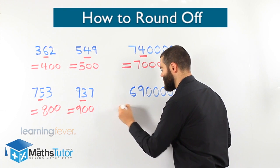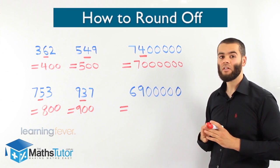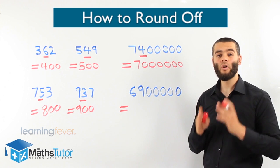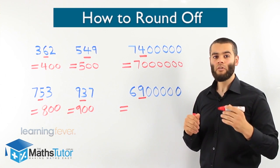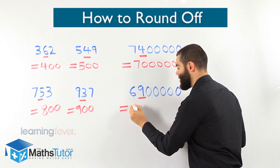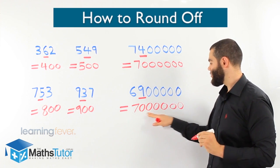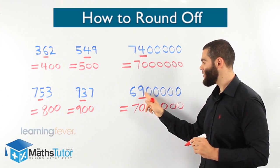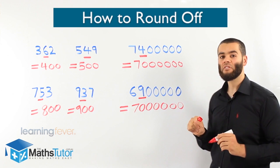Another example — see if you can do this one yourself. We are rounding off to the nearest million: six million and nine hundred thousand. We look for the number on the right of the millions column. Are you five or more? Yes — it's a nine, larger than five, so we can push up. Six million and nine hundred thousand rounds up to seven million, because the nine has enough muscles — it's five or more — and it pushed the six up to become seven million.